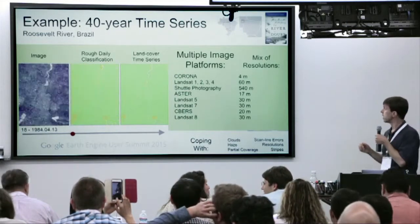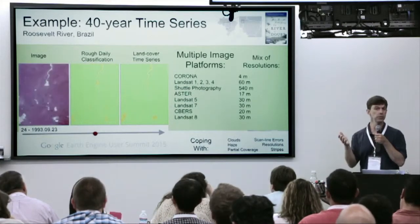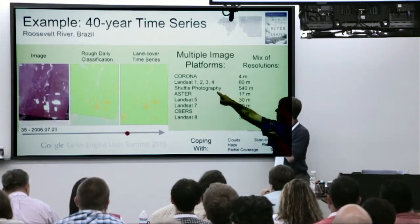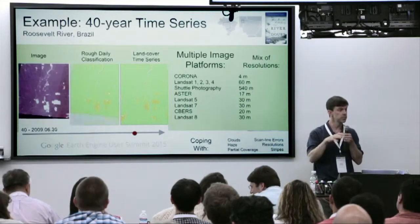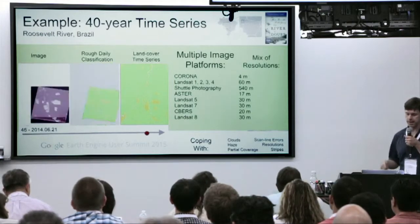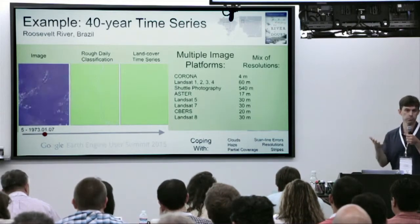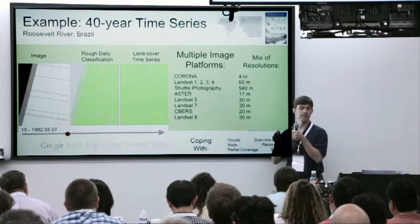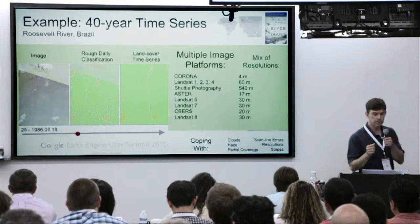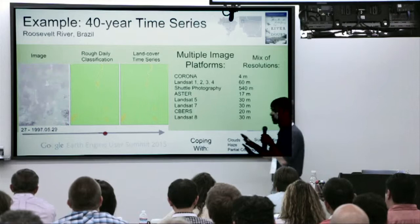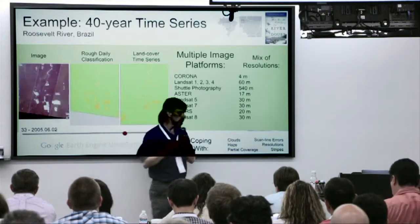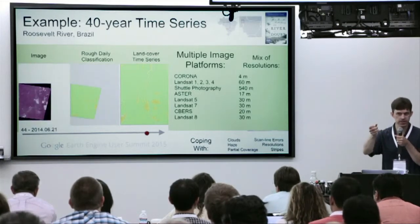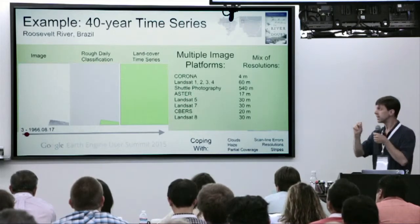This is all freely available imagery taken from GloVis. We have Corona imagery at 4 meters, Landsat 1, 2, 3, and 4 including from the first month after Landsat 1 was launched. We have photographs taken out the window of the space shuttle at 540 meter resolution, some ASTER data, Landsat 5, and then things more familiar to this room: the CBERS satellite at 20 meters, Landsat 7 and Landsat 8. The imagery really varies a lot in quality, and it would be difficult to develop any index among all these images to understand if a pixel had changed.